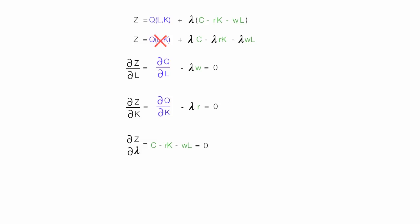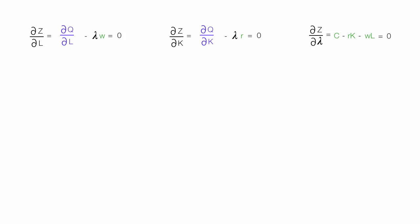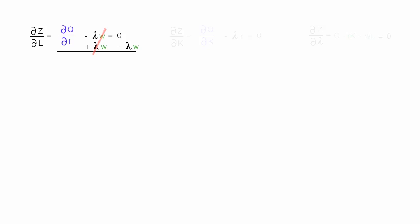I'm going to set all these equal to zero and solve for lambda, working on them one at a time. For the first equation, I add lambda times W to both sides so those terms cancel out, leaving me with: the partial derivative of Q with respect to L equals lambda times W. Then I multiply both sides by 1 over W, so the W's cancel, giving me: the partial derivative of Q with respect to L divided by W equals lambda.